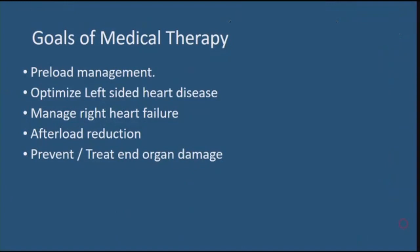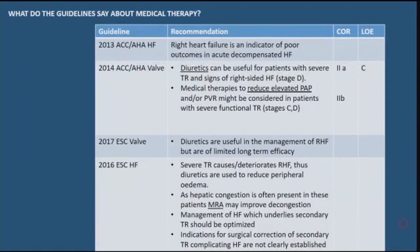Currently, guidelines support only medical therapy and surgical therapy for TR. Goals of medical therapy include preload management with diuretics or dialysis as needed, optimizing left-sided heart disease including valvular interventions, managing heart failure, afterload reduction with pulmonary vasodilators when indicated, and prevention and treatment of end-organ damage. Both American and European valve disease and heart failure guidelines provide limited guidance on medical therapy — mentioning diuretics, pulmonary vasodilators, and mineralocorticoid antagonists, all based on expert opinion.